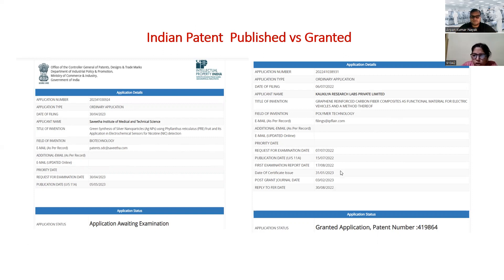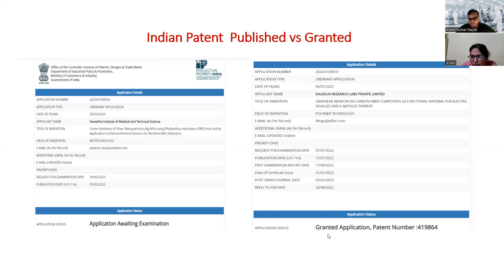Both look almost the same, but you just observe the bottom side. You will find that it says 'application status: applications awaiting examination' for a published application. In case of a granted application, it shows 'granted' with a patent number. So you get a patent number — when you click on it, you will get a certificate. Patent number is totally different from the application number.